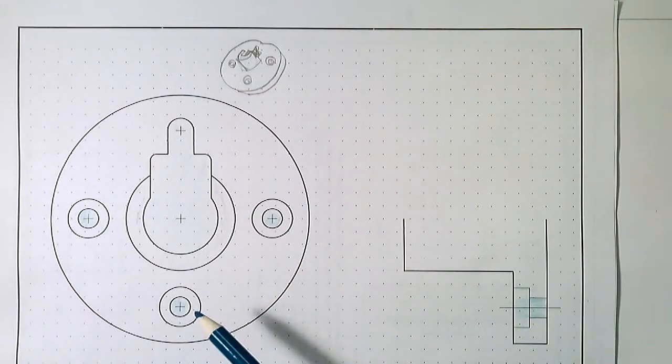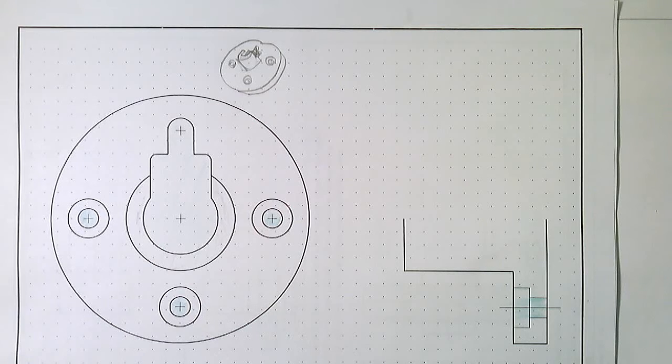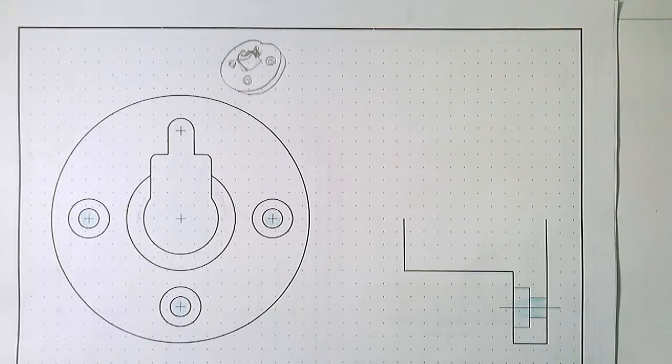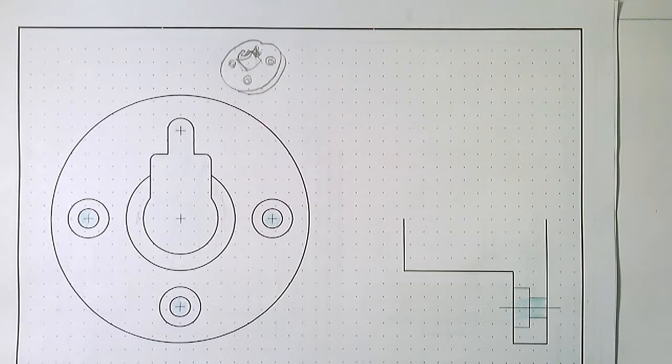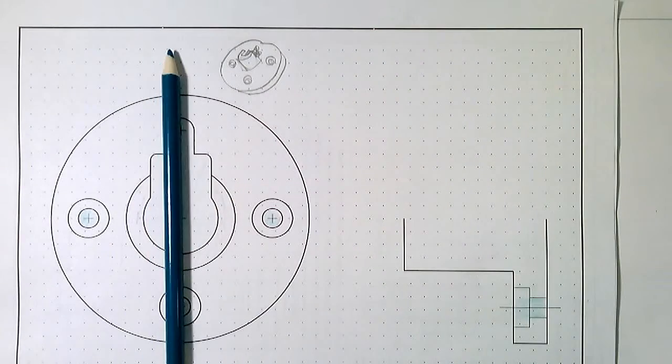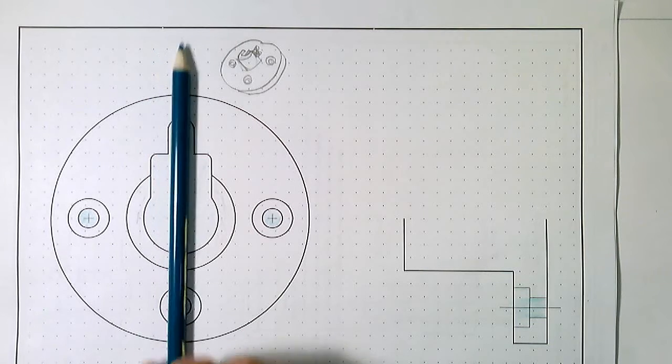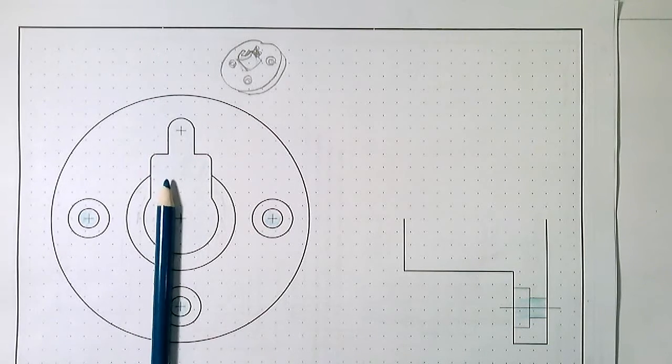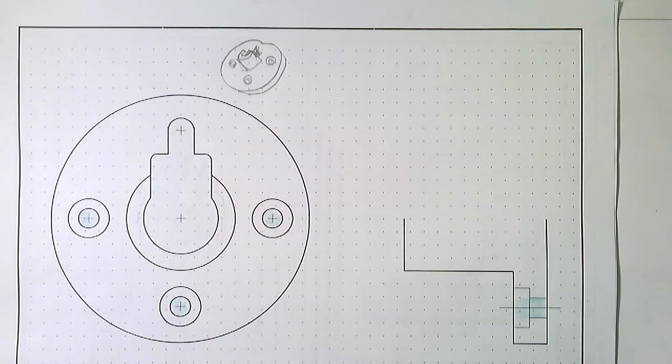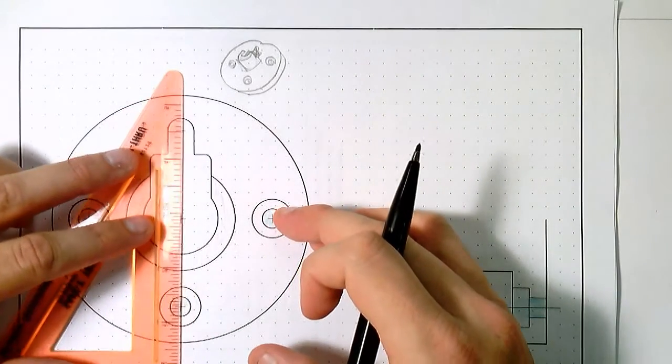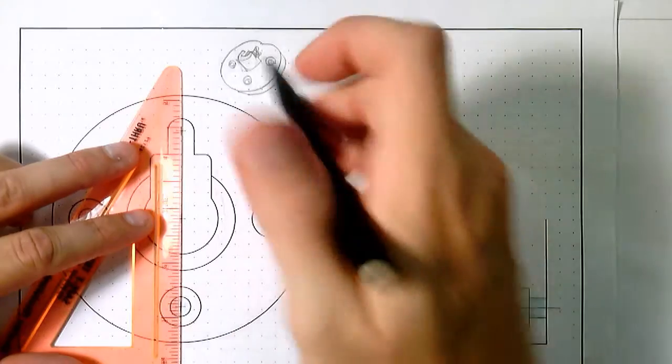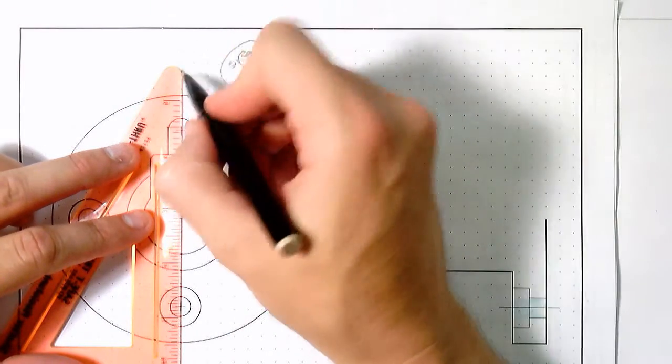So we figured out what's material and what's not. Now we need to show a section that tells the whole story with regards to the part. So what we'll do is create a full section. The full section is going to cut right through the vertical portion of this centering bushing. So I'm going to use a straight edge.